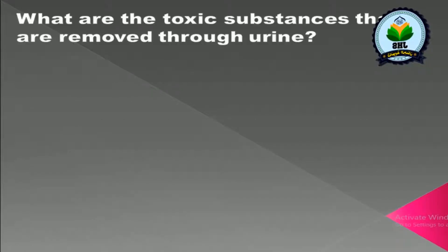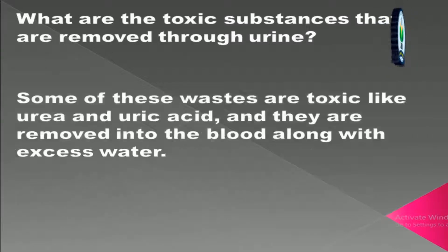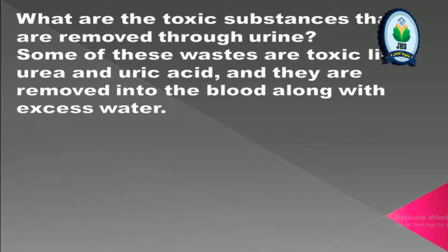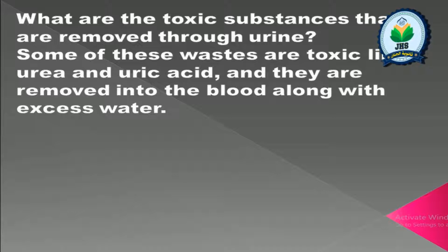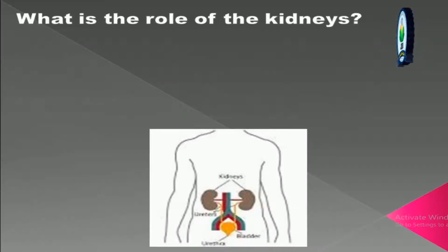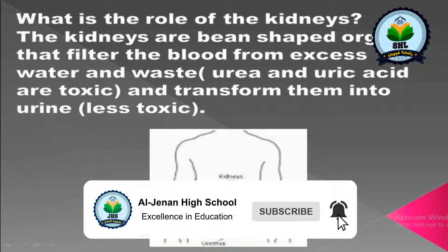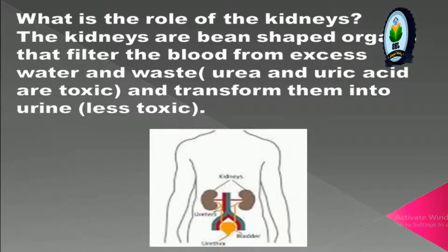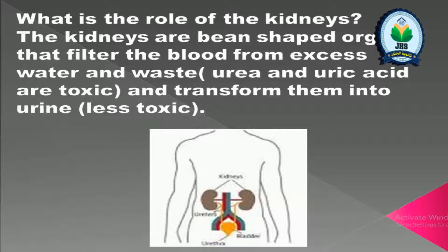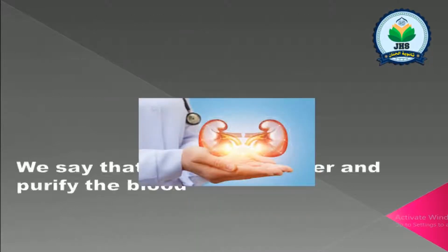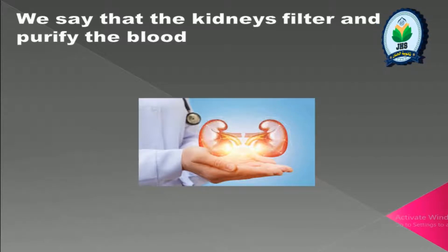What are the toxic substances removed through urine? Some of these wastes are toxic, like urea and uric acid, and they are released into the blood along with excess water. The kidneys are bean-shaped organs that filter the blood from excess water and waste such as urea and uric acid, which are very toxic, and transform them into urine, which is less toxic.